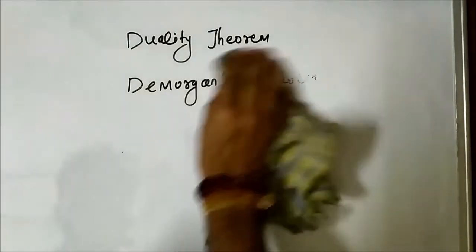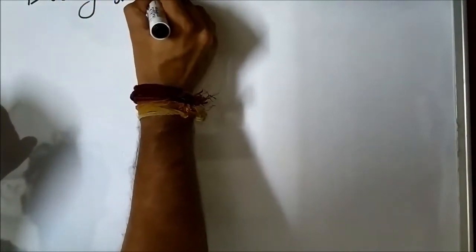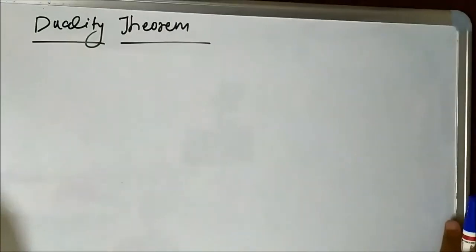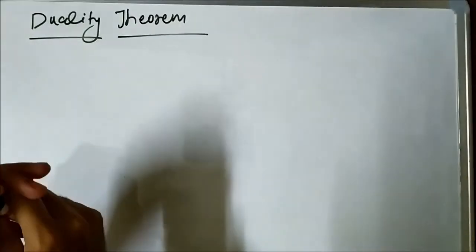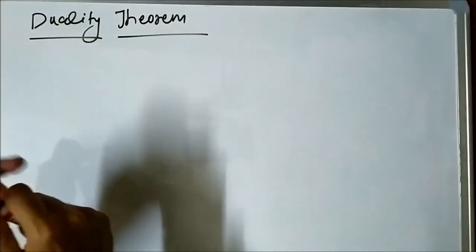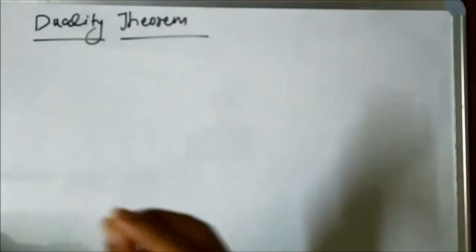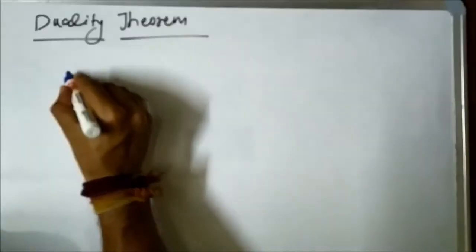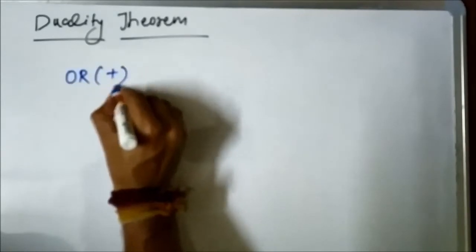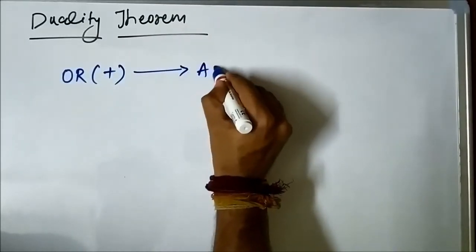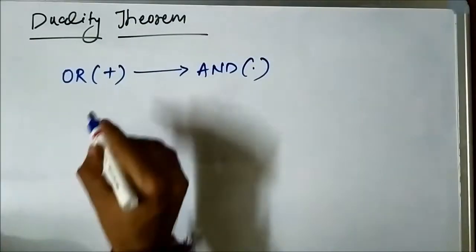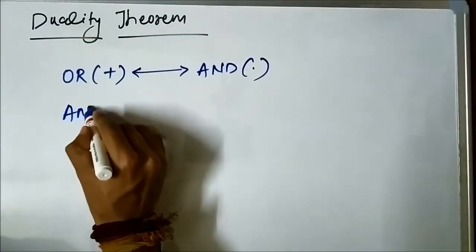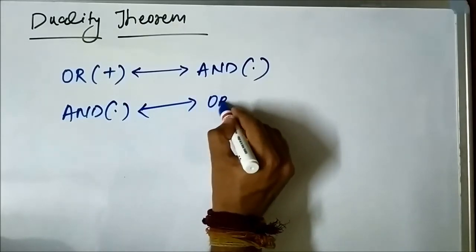So first we are going to discuss the duality theorem. The duality theorem is simply a change or a conversion from OR to AND, or AND to OR. The plus sign means OR, and we interchange it with AND, which is the dot sign.